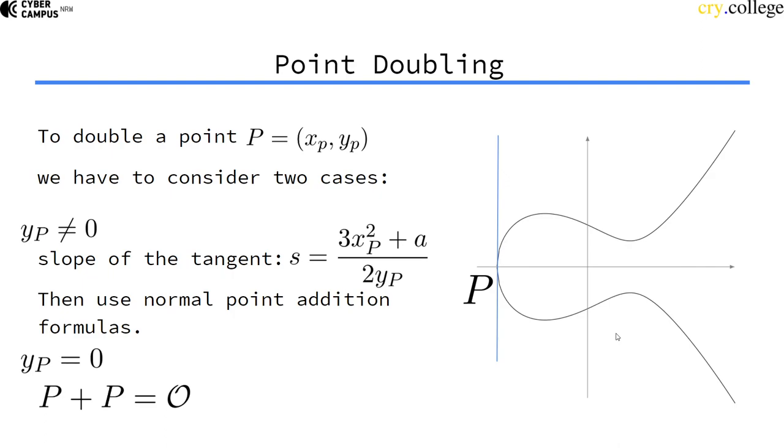But that only works if the y coordinate of p is not zero. Because then we actually have another intersection on the curve. Because if it is zero, the y coordinate, then the point lies on the x axis and is inverse to itself. And then by definition, the result of the point doubling would be the point at infinity, the neutral element.